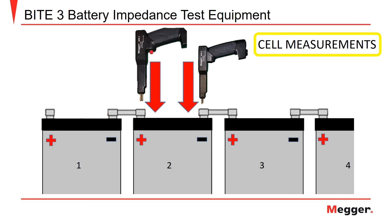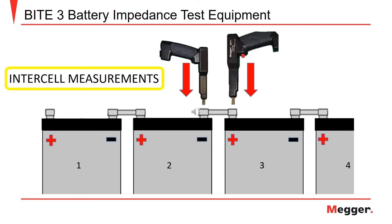Pull the trigger when you are ready to save your test values. To test the strap resistance between two battery cells, move the positive test probe to the positive terminal of the following battery in the string. In this case, the negative probe remains on cell number two and the positive probe has been moved to cell number three to measure the strap between cells two and three.